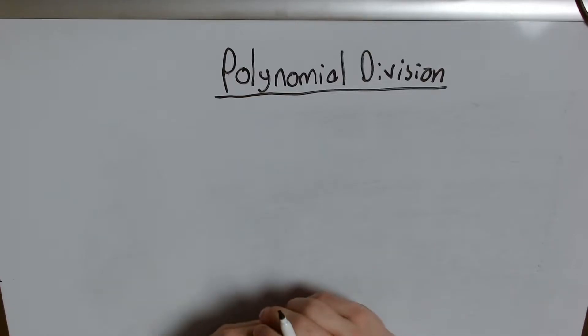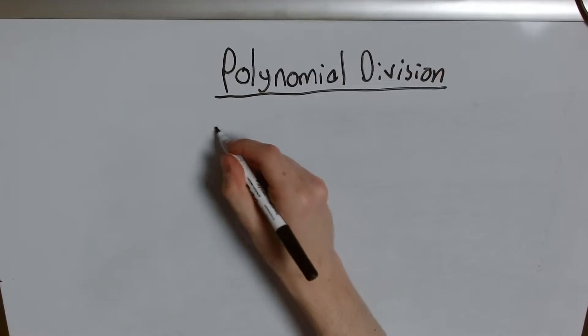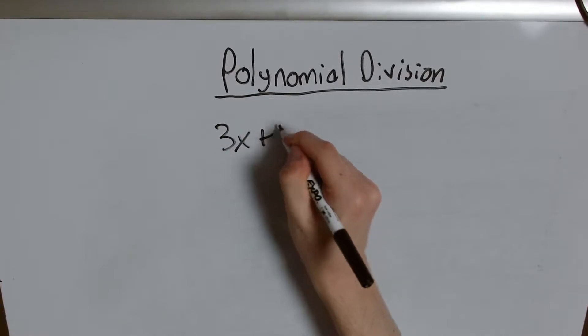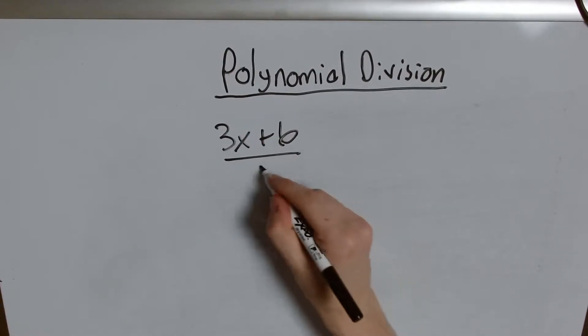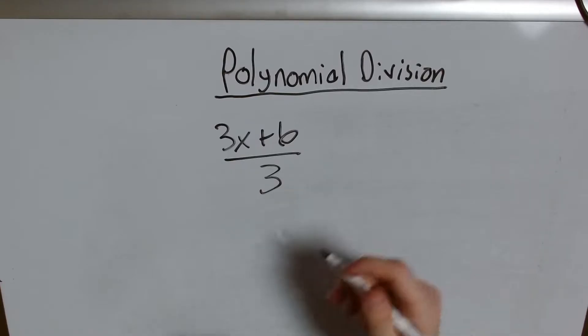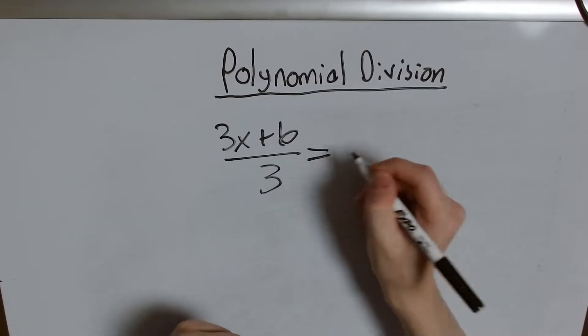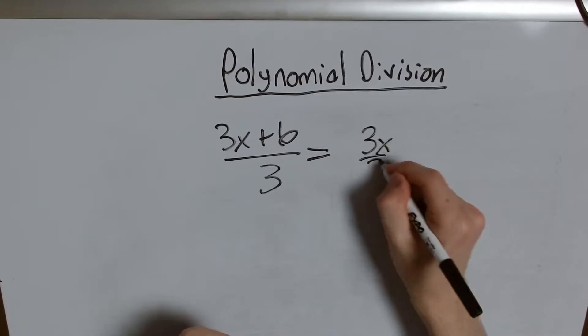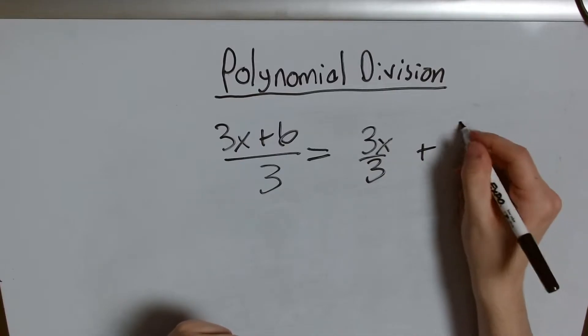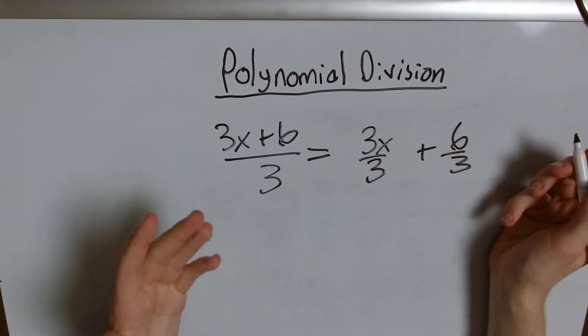For example, let's say we have something like 3x plus 6 over 3. You've probably had this assigned to you before as an algebraic simplification. And what you do here is you just break up that 3x over 3 and that 6 over 3 and you simplify them, right?